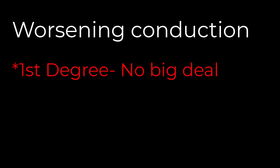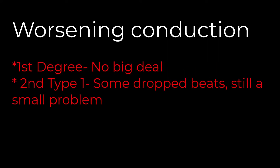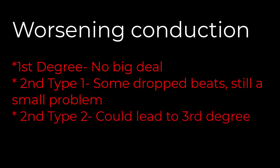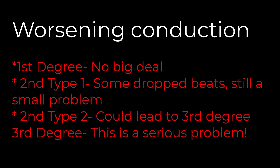Think of the heart block labels as a progression. Not all patients follow them in a stepwise fashion, but our labeling essentially describes worsening levels of conduction delay or blockage. A first-degree block is really no big deal because every impulse still goes through, just with a slight delay. A second-degree type 1 has some dropped beats — still a small problem. A second-degree type 2 could lead to serious problems and needs attention because it could progress to a third-degree block. And in the case of a third-degree block, the AV node is no longer functioning, and that is a serious problem.